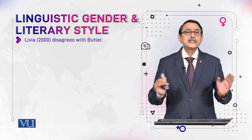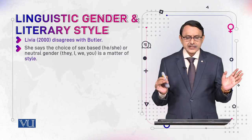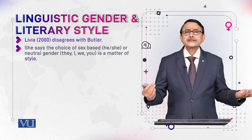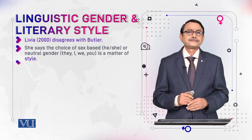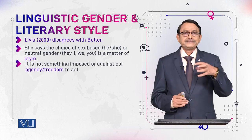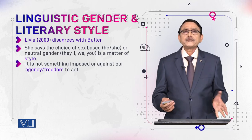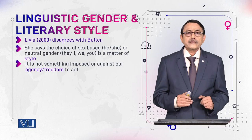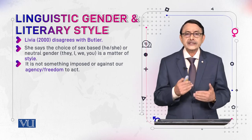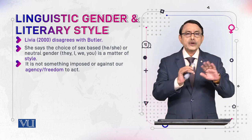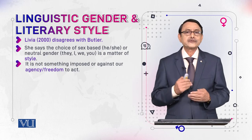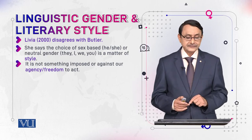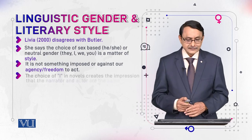Livia disagrees with Butler. She says the choice of sex-based 'he' and 'she,' or neutral gender 'they,' 'I,' 'we,' is a matter of style. It depends upon your purpose. It is not something imposed as Butler thinks — that the gender system imposes a restriction on us and that is why we are not free to perform gender. Butler's thinking was that the gender system puts boundaries and restrictions on our expression and performance of gender. But Livia says that this is a matter of style, not a matter of restriction — it depends on what your purpose is.